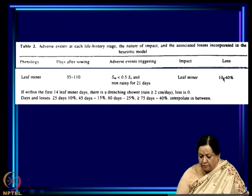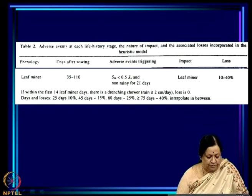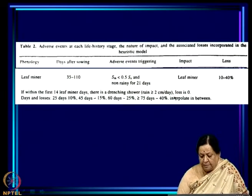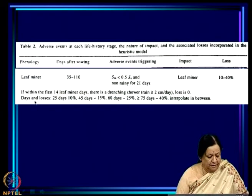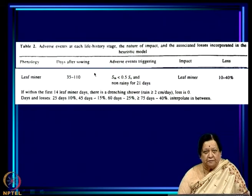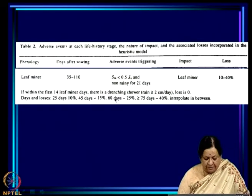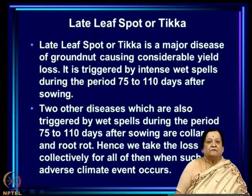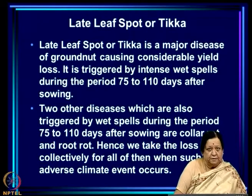The loss is calculated as follows: if within the first 14 leaf miner days there is a drenching shower of rain greater than 2 centimeters per day, the loss is taken as zero. Otherwise, the loss depends on the number of leaf miner days: 25 days gives 10 percent loss, 45 days gives 15 percent, 60 days gives 25 percent, and 75 days gives 40 percent loss. A 75-day dry spell means almost the entire post-flowering period has been dry.